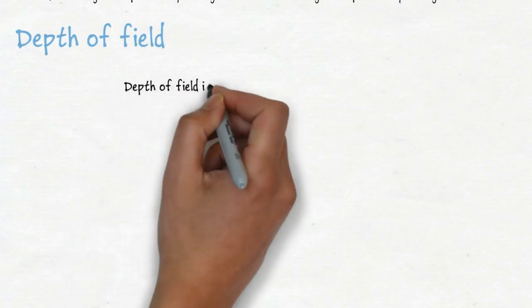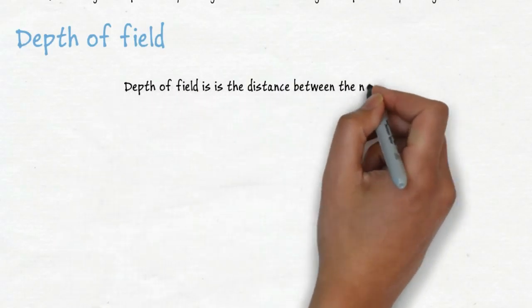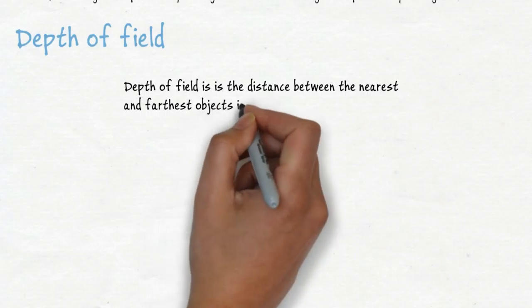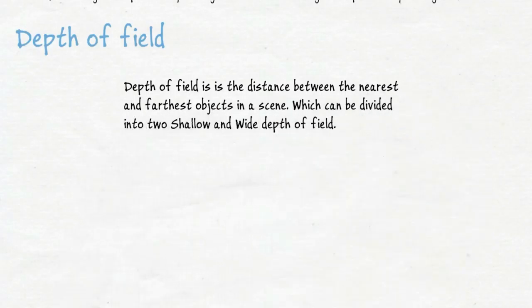Depth of Field. Depth of Field is the distance between the nearest and farthest objects in a scene, which can be divided into two, shallow and wide depth of field.